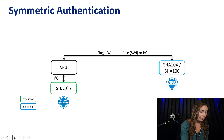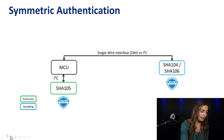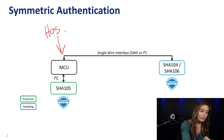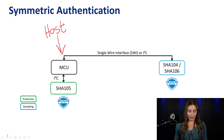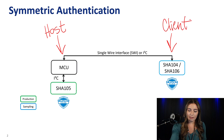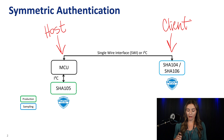Here we have our device interface architecture. On the left side we have the host device which is protected by a SHA-105 security IC, and on the right we have the client device which is protected by either a SHA-104 or a SHA-106.